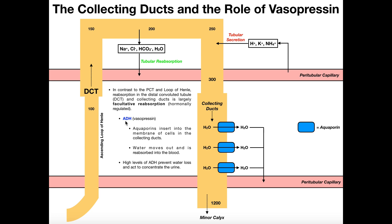If ADH is elevated in the blood, it's usually because you have a low fluid volume, and by negative feedback you need to get that fluid volume back up, meaning you need to get water back into the blood. What ADH actually does is cause aquaporins to move into the walls of the collecting ducts. Aquaporins are proteins that allow water to move through - if they are not present, water doesn't move into the blood. When aquaporins insert into the collecting duct, water moves from the duct into the blood, bringing blood volume back up to normal levels.